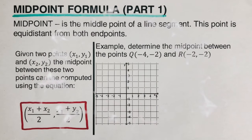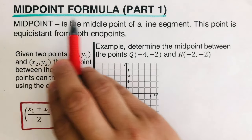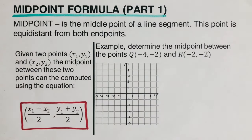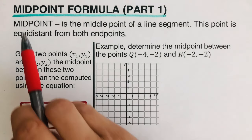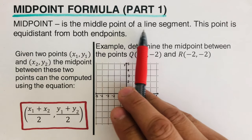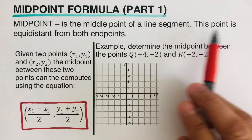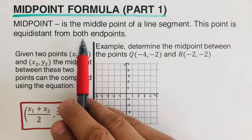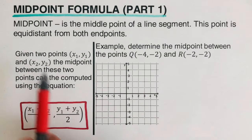Hello everyone. In this video we are going to determine the midpoint of two given points using the midpoint formula. This is the first part; I will put the link to the second part in the description box below. Midpoint comes from two words combined together — middle and point. The midpoint is the middle point of a line segment, and this point is equidistant from both ends.